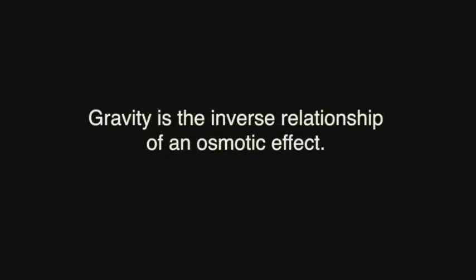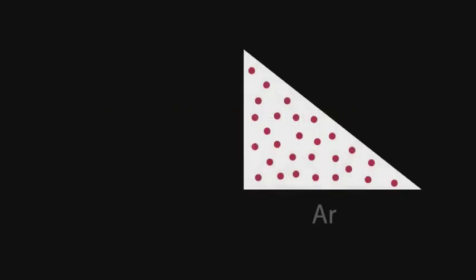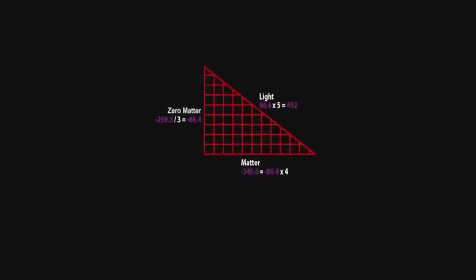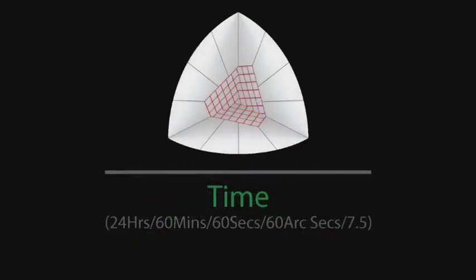Gravity is the inverse relationship of an osmotic effect, which is created by a lower charge density element defined by alternating current being attracted towards the higher charge density of a singularity zero point, representing direct current. The ATV illustrates the elemental charge density by representing the area that the fixed charge occupies. The elemental resonance is equivalent to and defined by the melting point of the element, which is defined by the ATV triangle area.